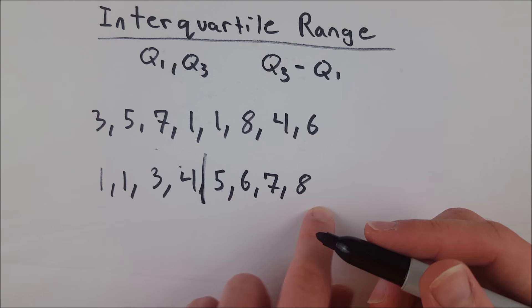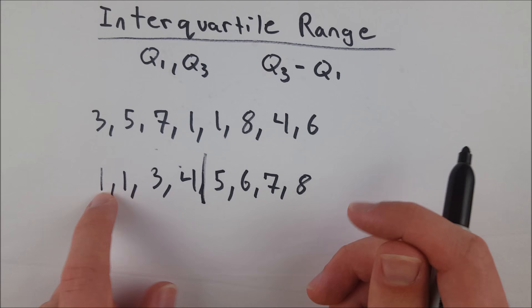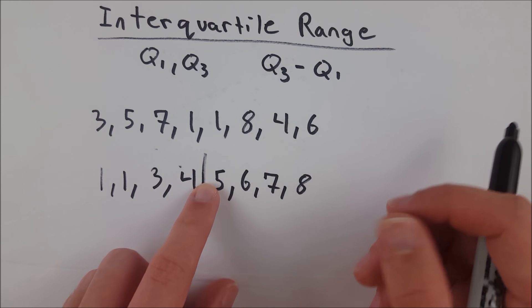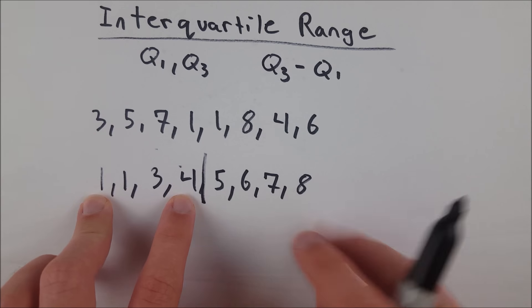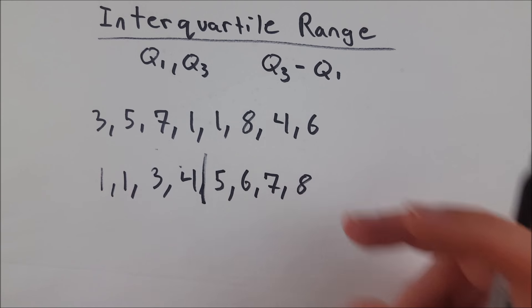If we had an odd number of data, let's say we had another four here, we would just split the data there. So we'd have these numbers down here and these numbers up here. And then this four, the extra four that we're pretending would be here, we would just eliminate. And we're only going to be concerned with these two halves of the data for finding the interquartile range.